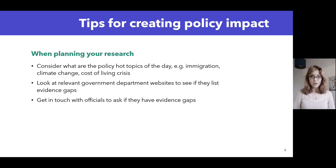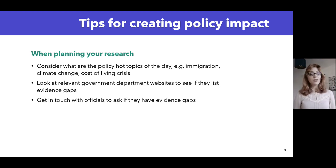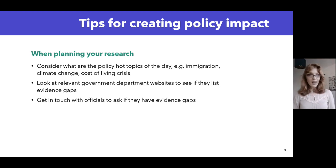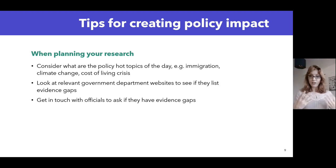To help with this, you could look at relevant government departments' websites to see if they list any evidence gaps. Not all departments do this, but some do, and you might get a better idea about the areas each department is interested in. To go even further, you could actually get in touch with officials that work in these departments to ask if they have any evidence gaps that need filling. Most of them will be very happy to give you a list of things they unfortunately don't have time to do, that you could go off and research.